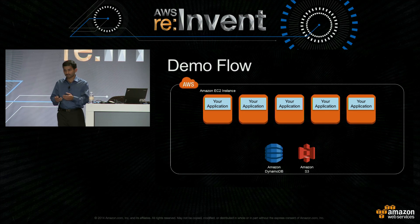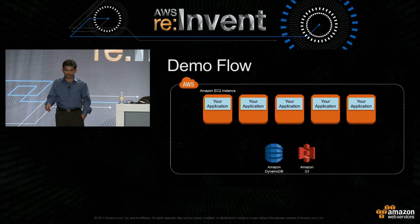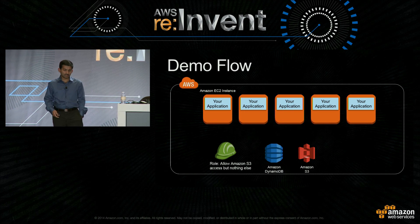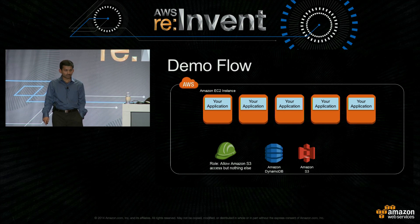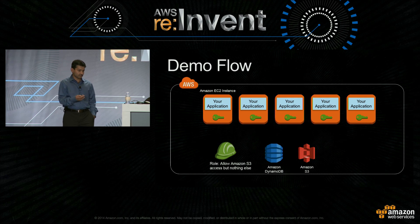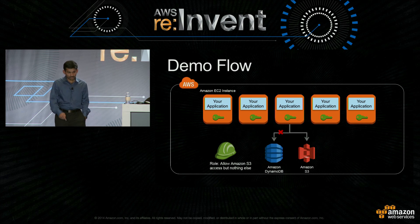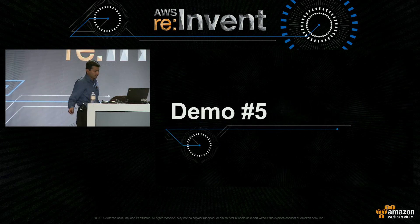The demo flow is simple. You have a bunch of EC2 instances on which you have your application running. You create a role in your account — in this case I'm going to allow only S3 access, not any other access. And when you launch an instance with the role, the credentials are made available to the instance and the application can access AWS services. Access to S3 will be allowed; to DynamoDB, it will not be allowed. Let's see the demo.